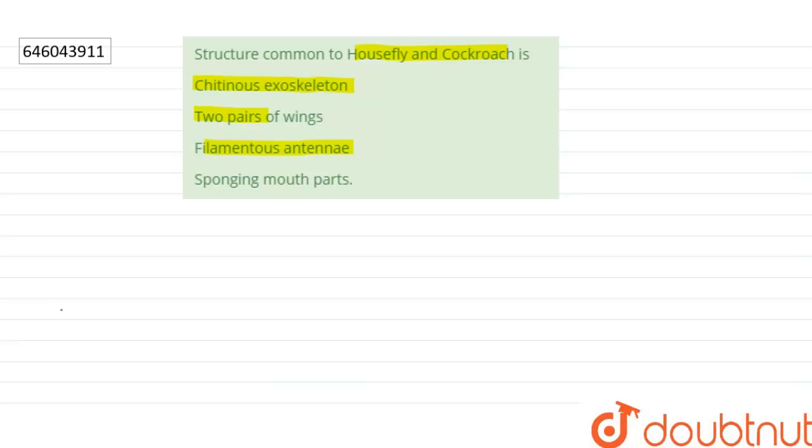If we talk about housefly, one pair of wings is present. In cockroach, two pairs of wings are present. So that means this option is wrong.